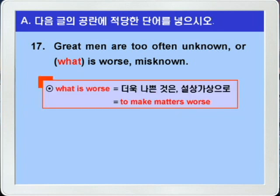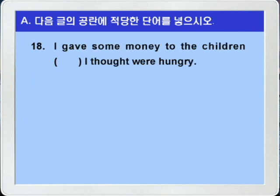'What is worse'는 '더욱 나쁜 것은, 설상가상으로', 그래서 'to make matters worse'와 이런 의미가 됩니다. 그럼 정답을 다시 한번 더 확인해보고 마지막 18번으로 가죠. 18번입니다. 이번 문제는 시험에 아주 잘 나오는 형식이에요. 블랭크 뒤에 'I thought'라는 주어동사가 나온다고 해서 목적격 whom을 쓰면 안되겠어요.